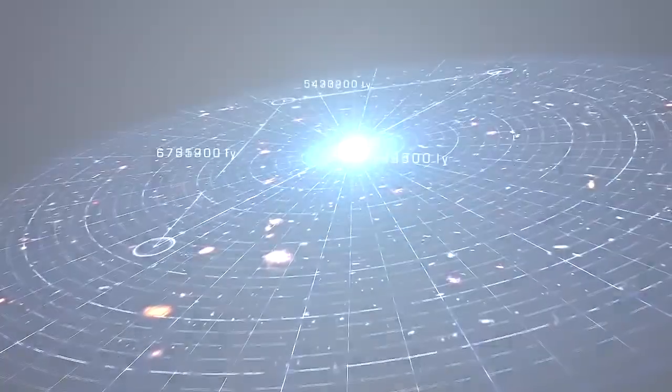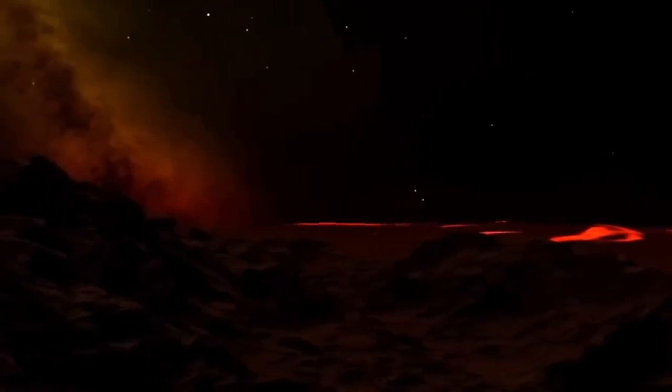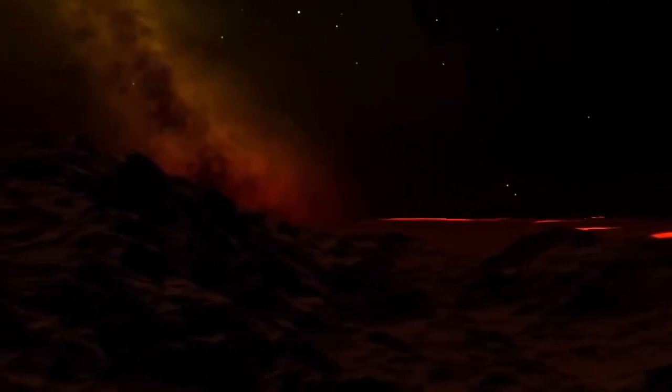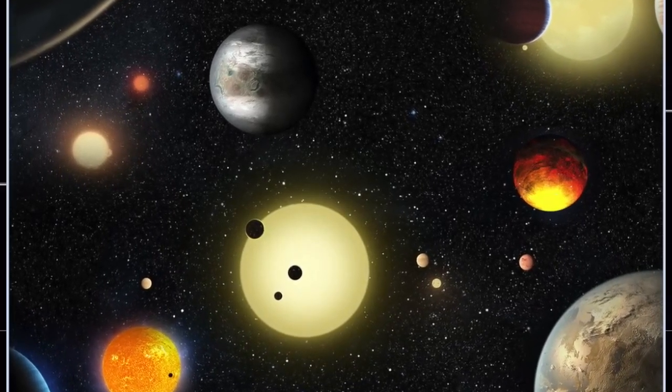GJ-1214b. The exoplanet Super Earth GJ-1214b has a mass of about 6 times that of Earth, and its decor is most likely made up of water-ice. It appears to be hot and humid, making it unlivable to life as we know it on Earth. It is also the first super-Earth discovered to have an environment.